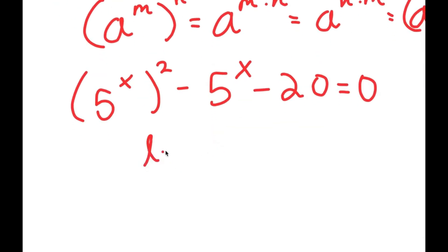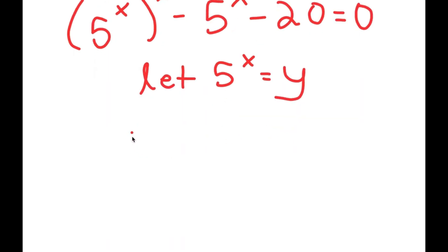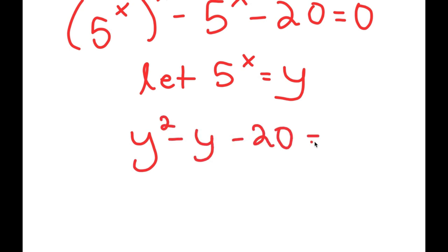Now I'm going to let 5 to the power of x equal to y. So I get y squared minus y minus 20 is equal to zero.